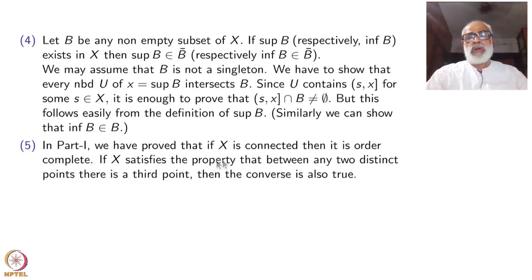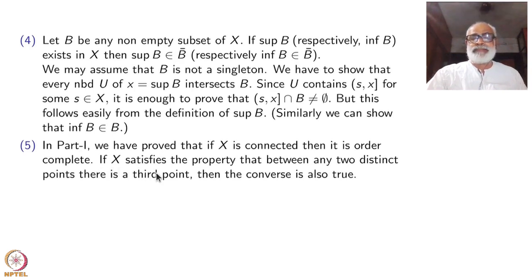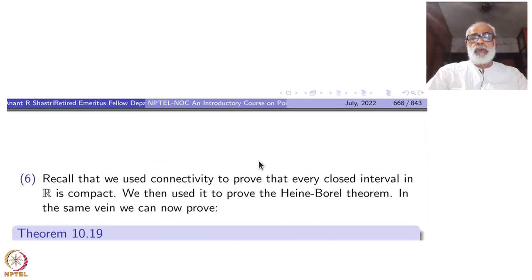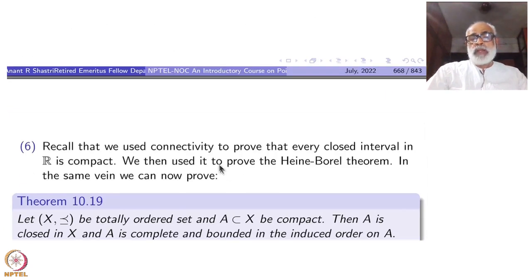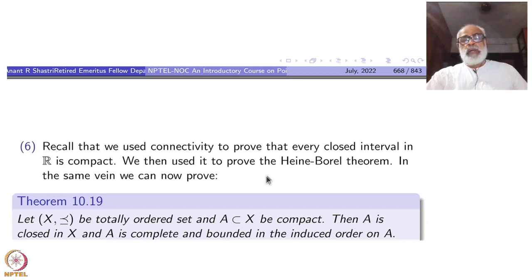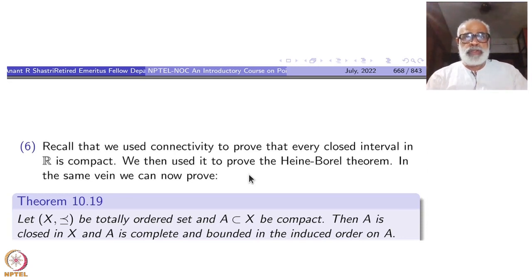In Part 1, we proved that if X is connected then it is order complete. If X satisfies the property that between any two distinct elements there is a third element, then the converse is also true. We recall that connectivity was used to prove that every closed interval in R is compact, and then that was used to prove the Heine-Borel theorem.